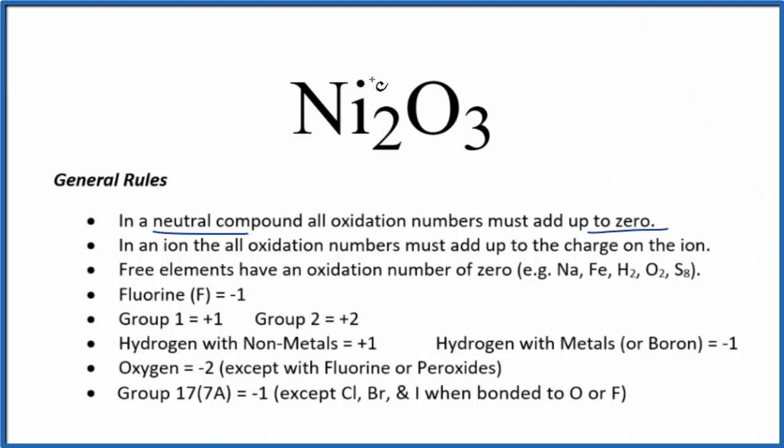Nickel is a transition metal and can have different oxidation states depending on what it's bonded to. But we do know that oxygen is almost always -2. So the oxidation number on each oxygen here is -2. Three times -2, that's -6.